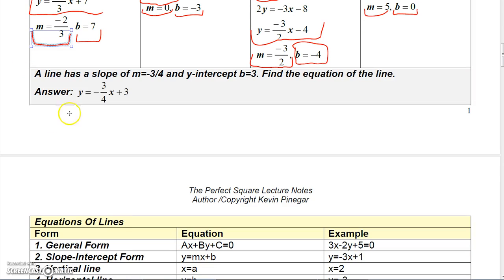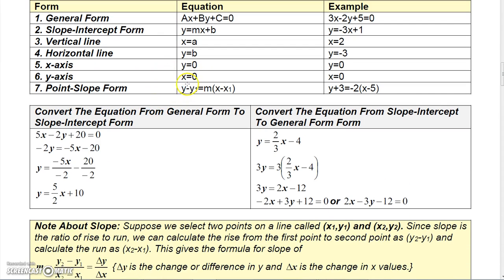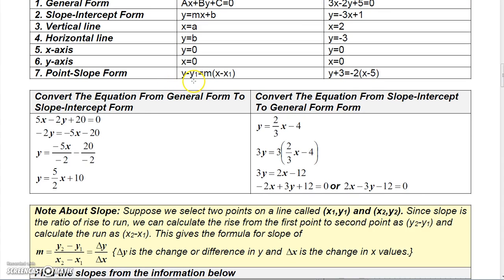Freeze the video if you need to and take a look at how I got this equation from the slope and the y-intercept. There are several different ways you can write an equation of a line: the general form, slope-intercept form, a vertical line x equals a, a horizontal line y equals b. y equals zero is the x-axis, x equals zero is the y-axis. y minus y₁ equals slope times x minus x₁ is the point-slope form, used when you know the slope and a point on the line.